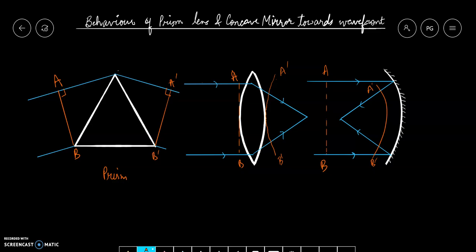So this is how a prism, a lens and a concave mirror change the wavefronts. Thank you for watching this. Have a good day.